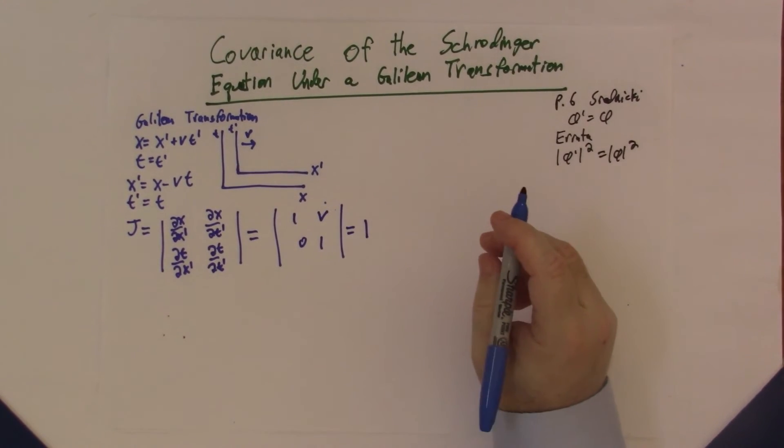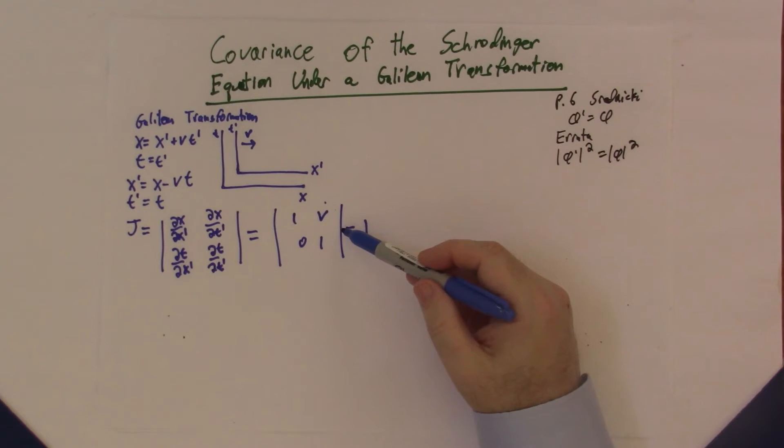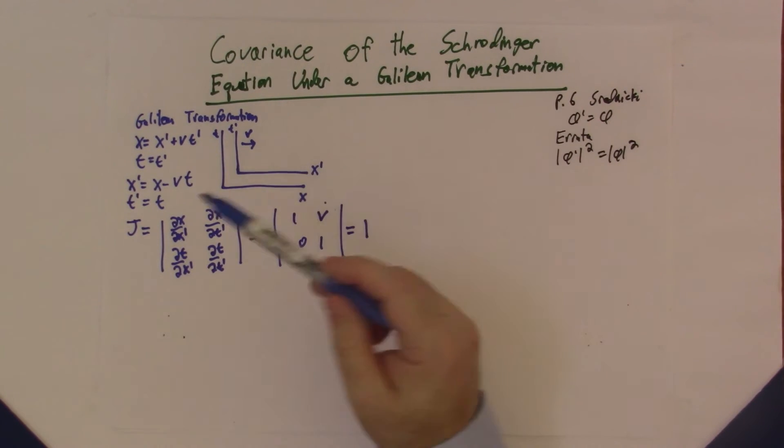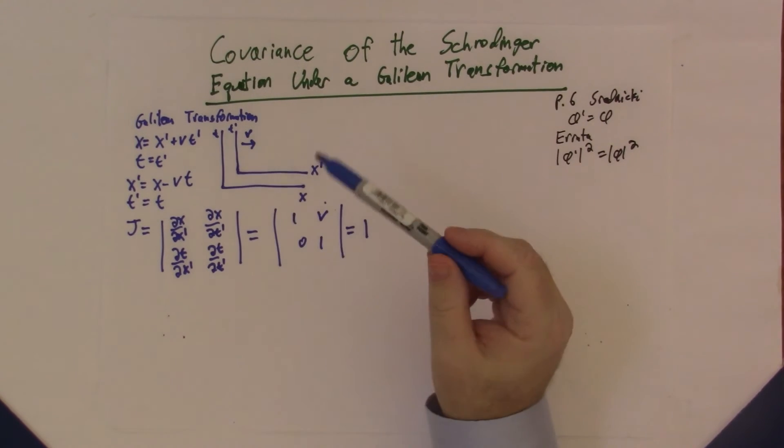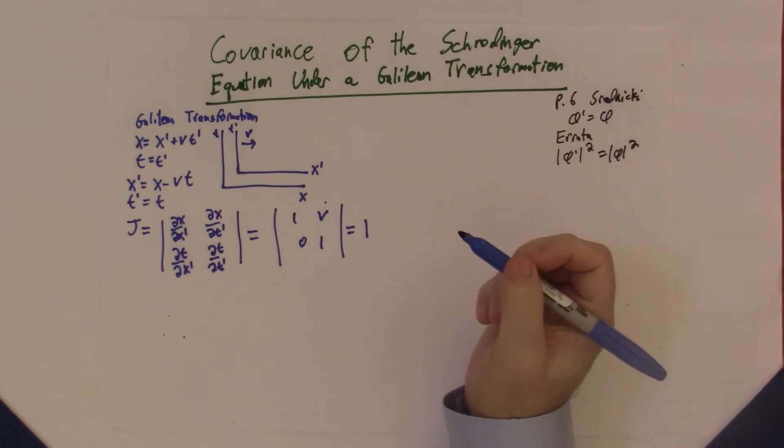This is what we expect, because we know under Galilean transformations, volumes don't change. Although this is the space-time value, we know that time is the same for everybody, so time intervals are the same. This implies that volume intervals are the same.